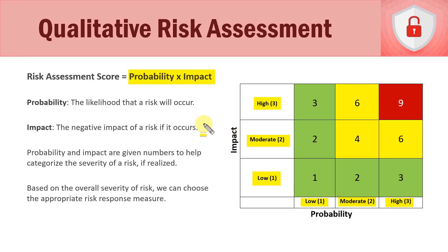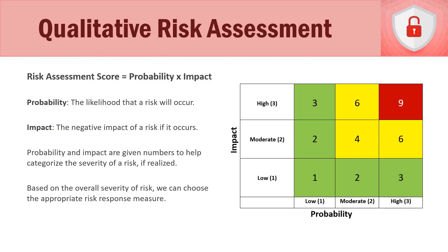For each risk identified, we assign a score of one, two, or three for both impact and probability based on severity, then multiply them together. You can use any scale — one to ten, one to twenty, one to a hundred. This is a simple example. A low-impact, low-probability risk scores one times one, giving an overall qualitative risk assessment score of one.